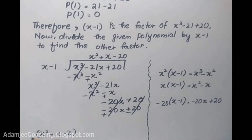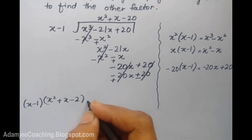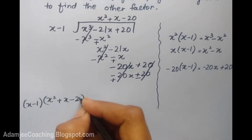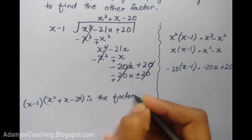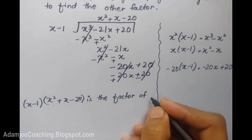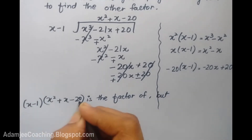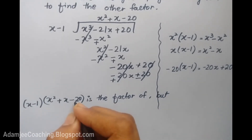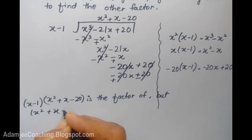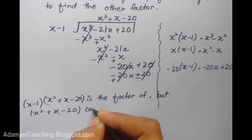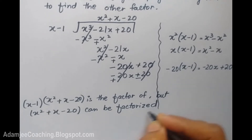So we can write the quotient as x squared plus x minus 20. Here we have the first factor x minus 1, and x squared plus x minus 20 is also a factor of the given expression. But x squared plus x minus 20 can be factorized further.